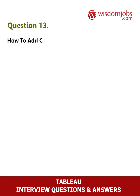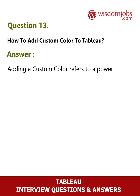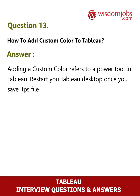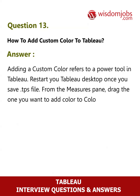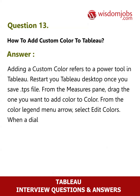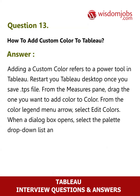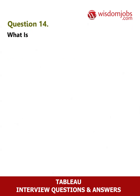Question 13: How to add custom color to Tableau? Adding a custom color refers to a power tool in Tableau. Restart your Tableau Desktop once you save the .tps file. From the measures pane, drag the one you want to add color to. From the color legend menu arrow, select 'Edit Colors'. When a dialog box opens, select the palette drop-down list and customize as per requirement.